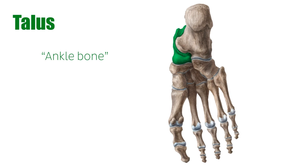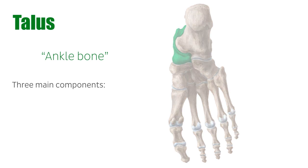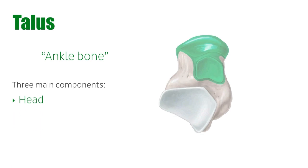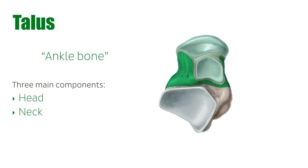The talus bone is described as having three main components: a head, a neck, and a body.